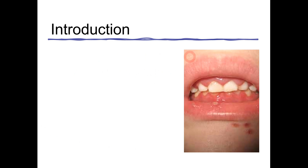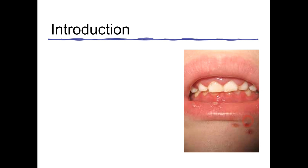In this clinical picture, you can appreciate that this is the oral cavity and you can see the lips, gingiva, teeth, and the chin area. You can appreciate that there are certain vesicles which are present near the chin. You can also appreciate that there is an ulcer present, as well as generalized gingivitis — the gingiva is swollen and enlarged. This is basically acute herpetic gingivostomatitis, which is an infection of the oral cavity.